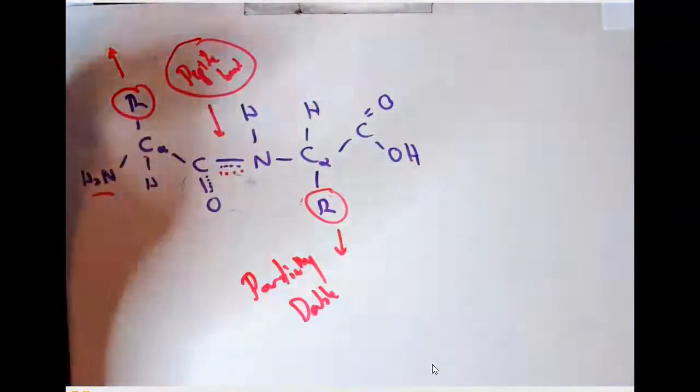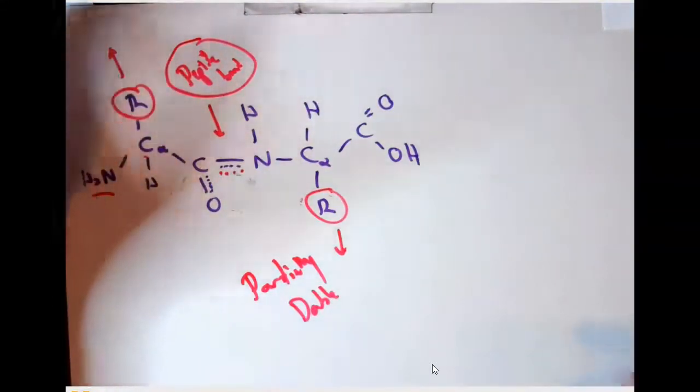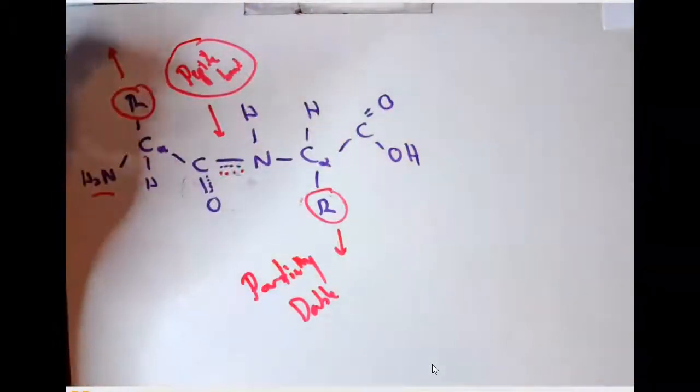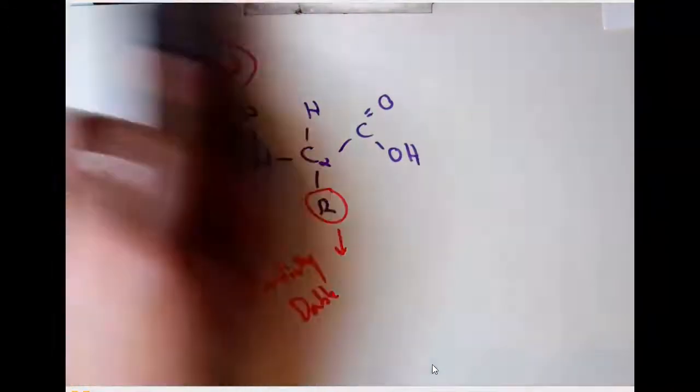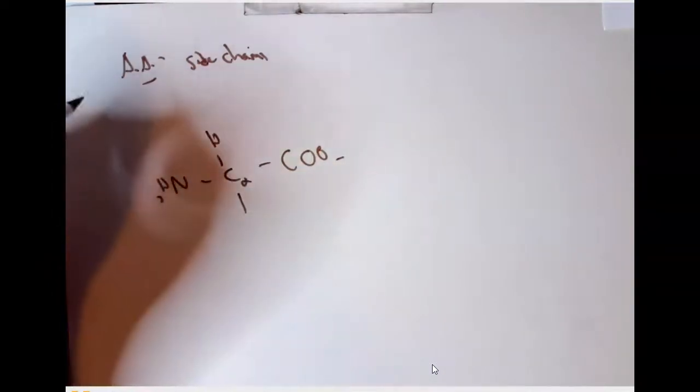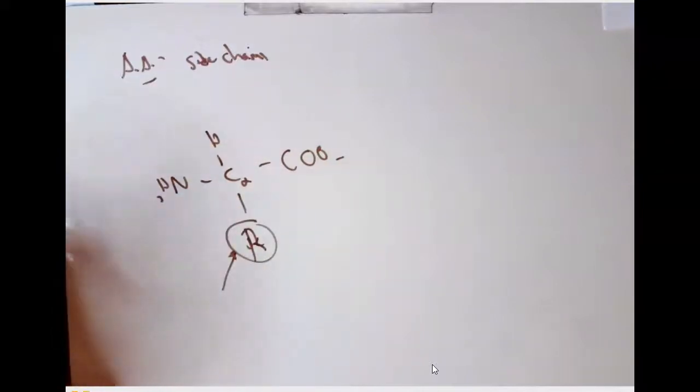Resonance is hopefully a recap from general chemistry or organic chemistry. More importantly, it restricts the rotation of the peptide bond and keeps side chains in a trans configuration. Now the last topic: what do you need to know about classifying amino acids? Amino acids are always classified by the chemistry of their side chains, because every amino acid shares the same amino group, alpha carbon with a proton, and carboxyl group. It's the side chain — the variable group — that makes one amino acid different from another.